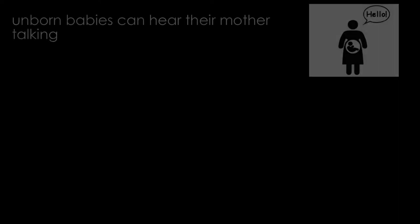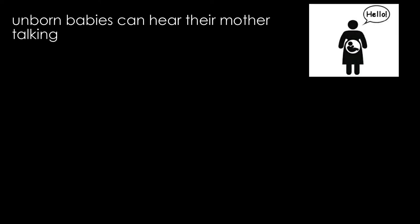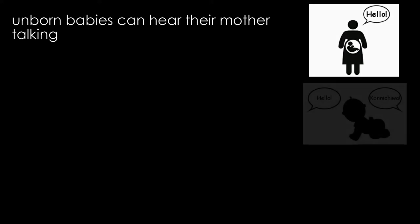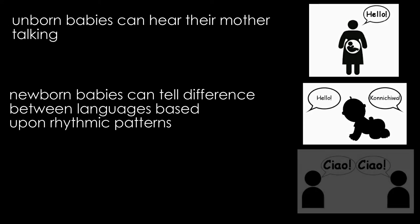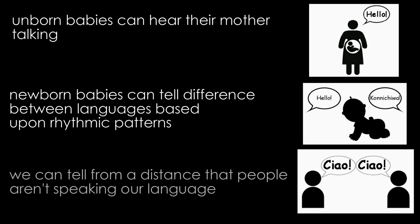Unborn babies are sensitive to the rhythmic patterns of their native tongue, because they can hear their mother speaking whilst they're in the womb. Experiments have found that newborn babies can tell the difference between different languages based purely upon their different rhythmic patterns. This is similar to when you can hear people talking at a distance and you just know they're not speaking English — you can tell because the rises and falls in the rhythmic patterns of languages differ.